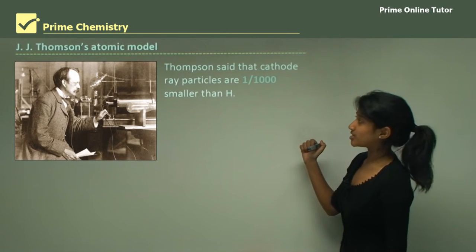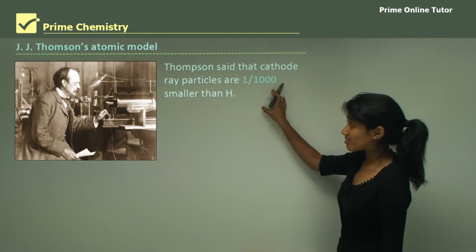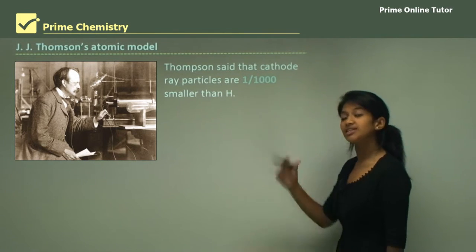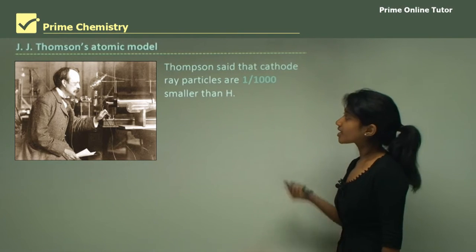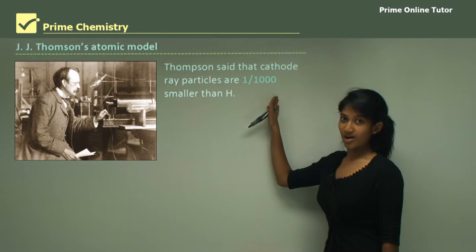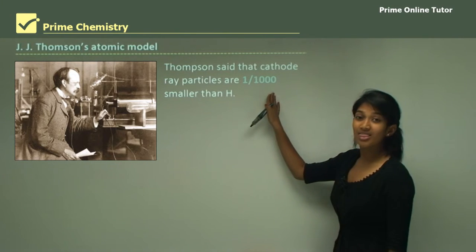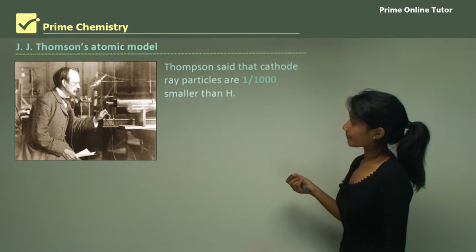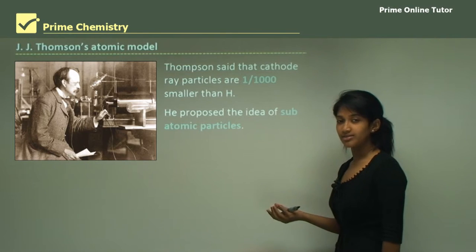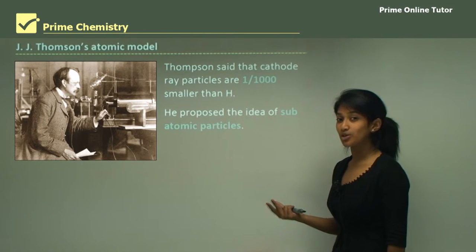Next came JJ Thomson. His atomic model said that a cathode ray particle was one-thousandth of a hydrogen atom. A hydrogen atom contains a proton and an electron, and Thomson worked with cathode ray particles. Cathode ray particles are only electrons, so an electron is a thousandth of an atom. He proposed the idea of subatomic particles — particles inside the atom — for example protons, neutrons, and electrons.